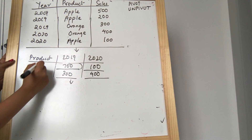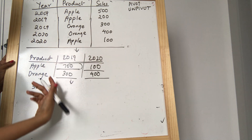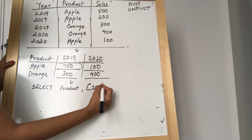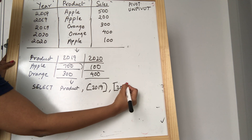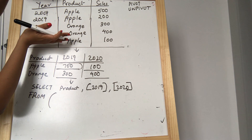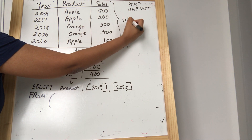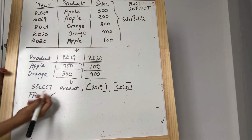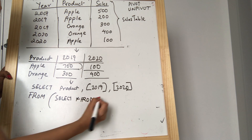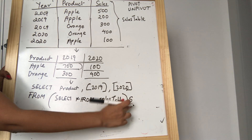So how do we get to this output? The query I will write is: SELECT product, 2019, 2020 — those are the column names of my output. So I wrote in the SELECT query the column names of my output. From where? My source is this table. I will give a name for this table — sales table. So: FROM (SELECT * FROM sales_table) AS sales. This is my source table.